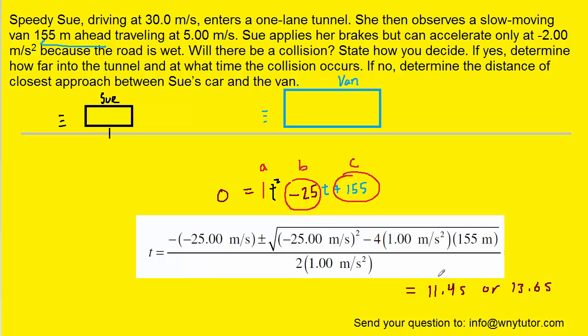Now, of course, the collision would occur at the earlier time. And so, indeed, they will collide at 11.4 seconds. If they didn't collide, what you would have gotten is an imaginary number. In other words, underneath your square root, you would have gotten a negative result. And we remember from math that the square root of a negative number is imaginary. So if that had happened, then there would not have been a collision. But because we got a real answer for time, then there is indeed a collision, unfortunately for Sue.